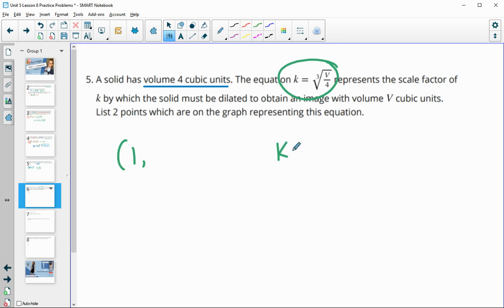If you wanted to pick one, you certainly could. Then you'll just plug it in here. So k will equal the cube root of one divided by four, and that doesn't simplify. So there's one point.